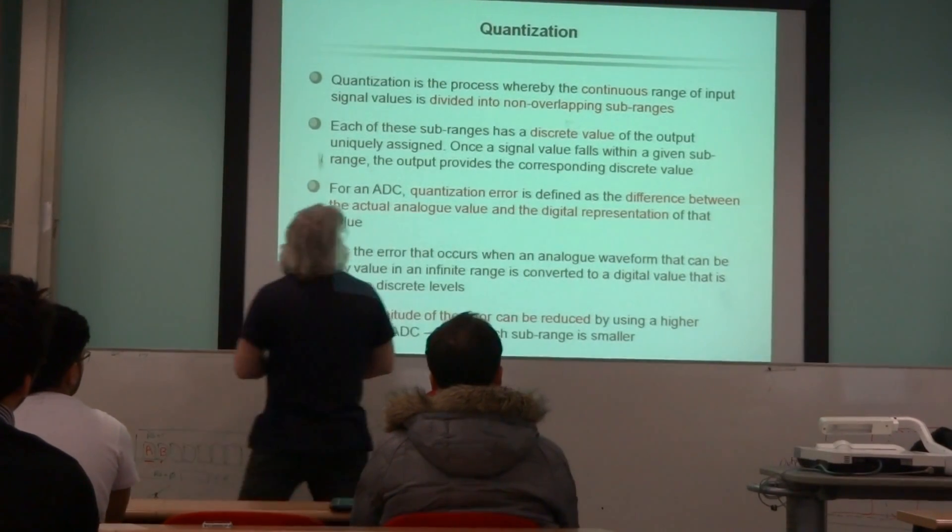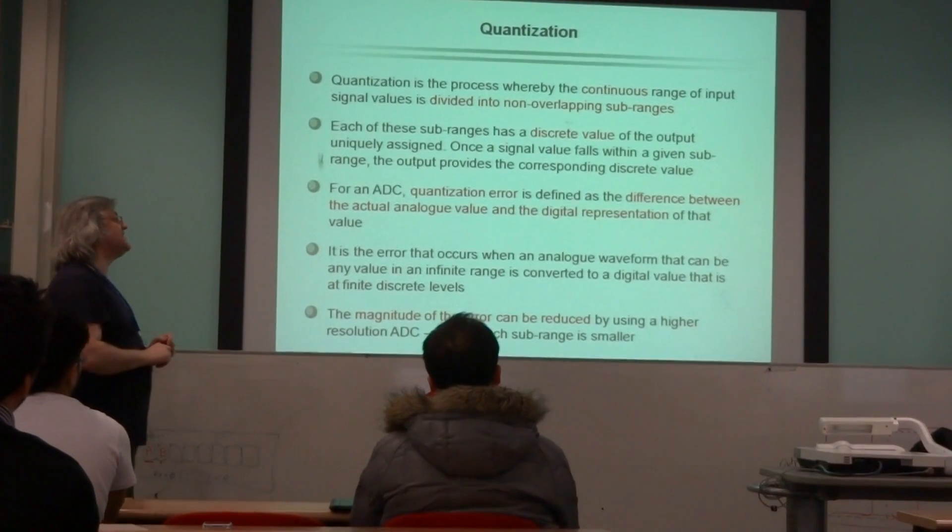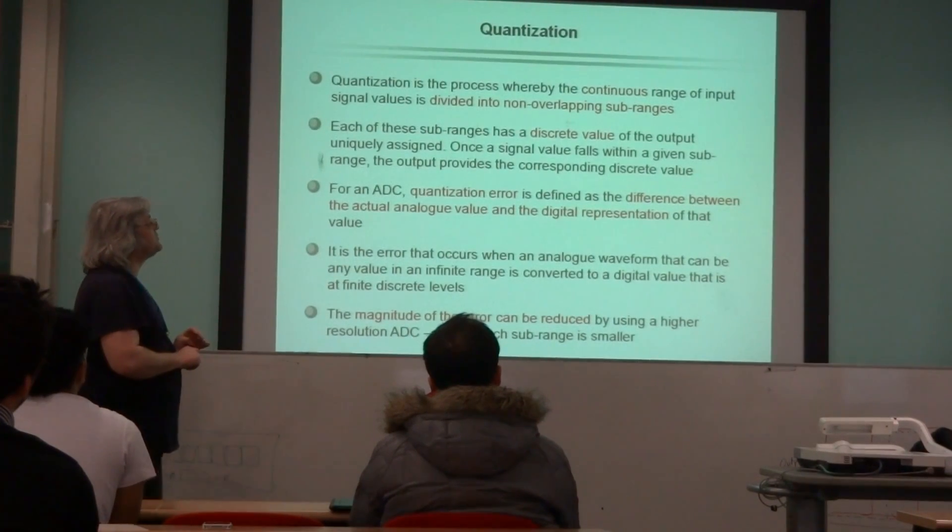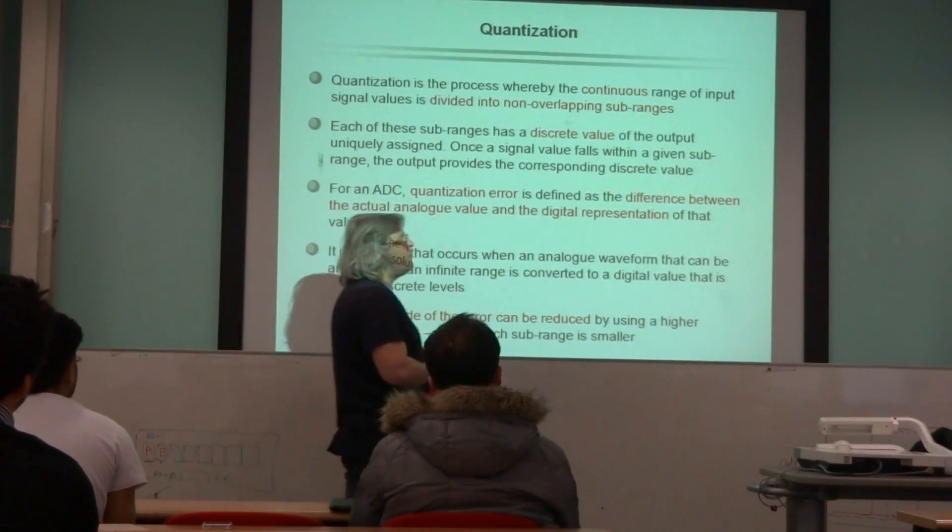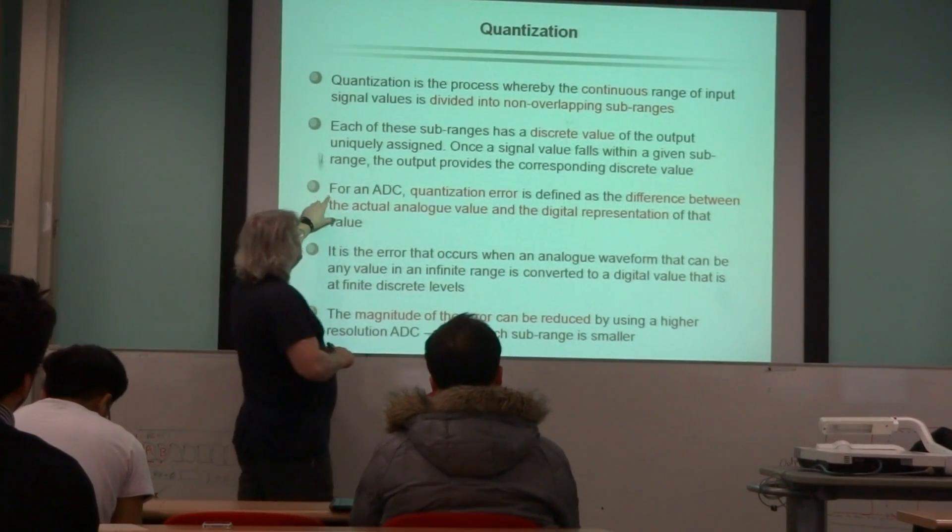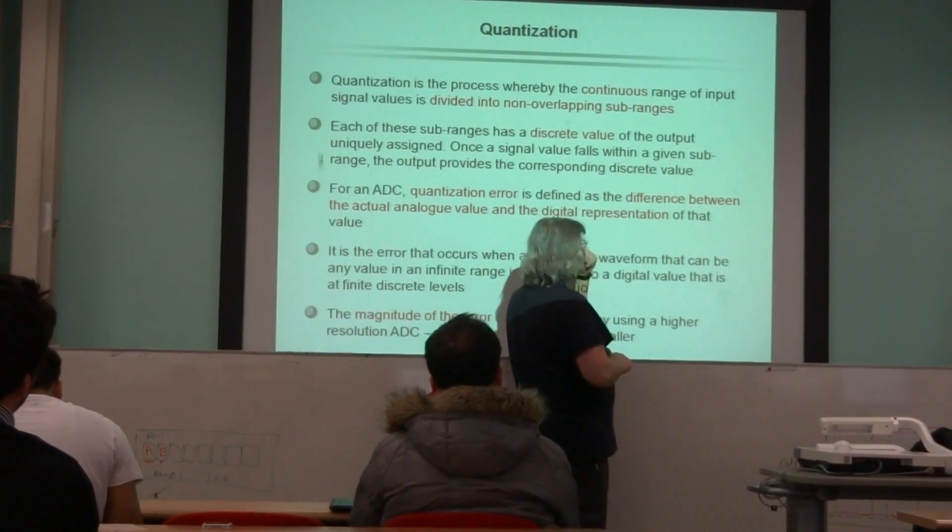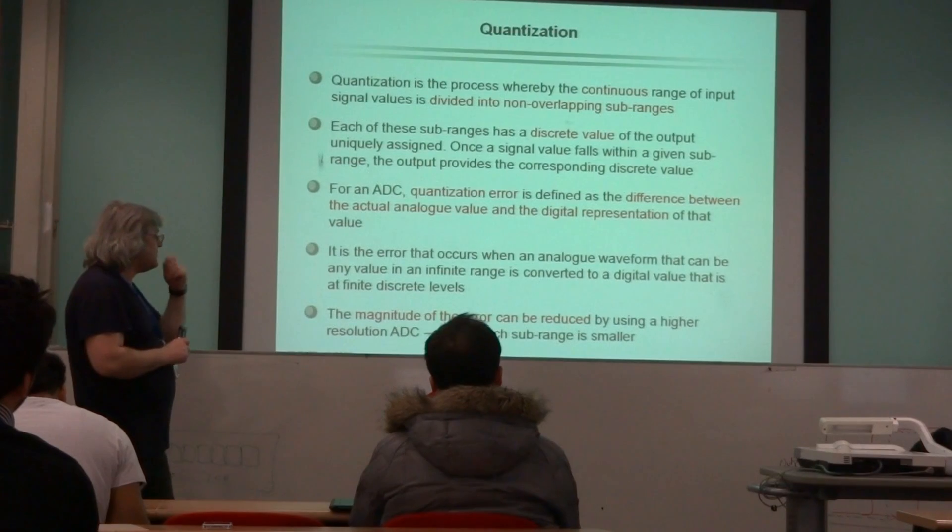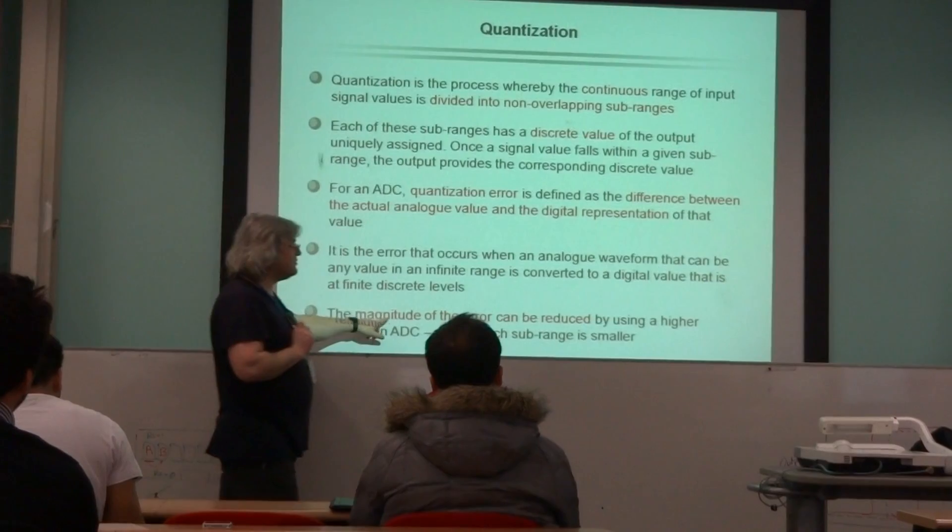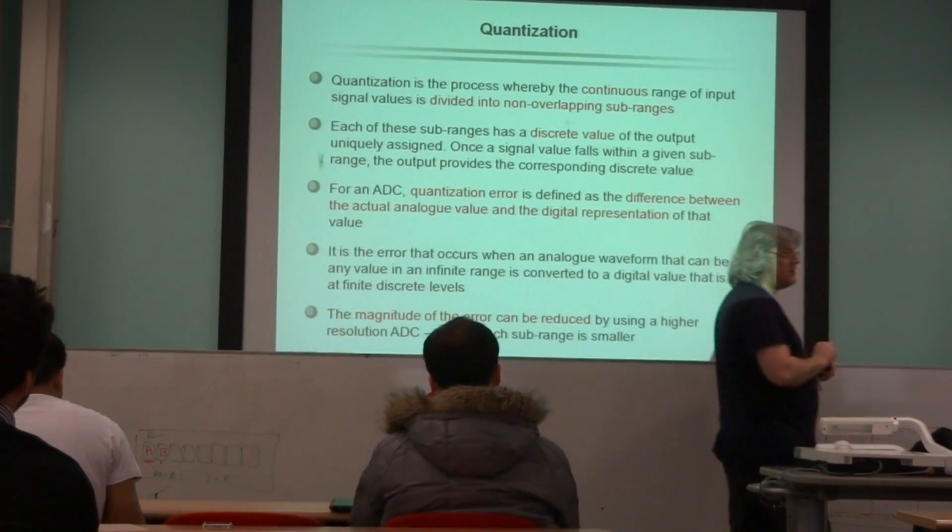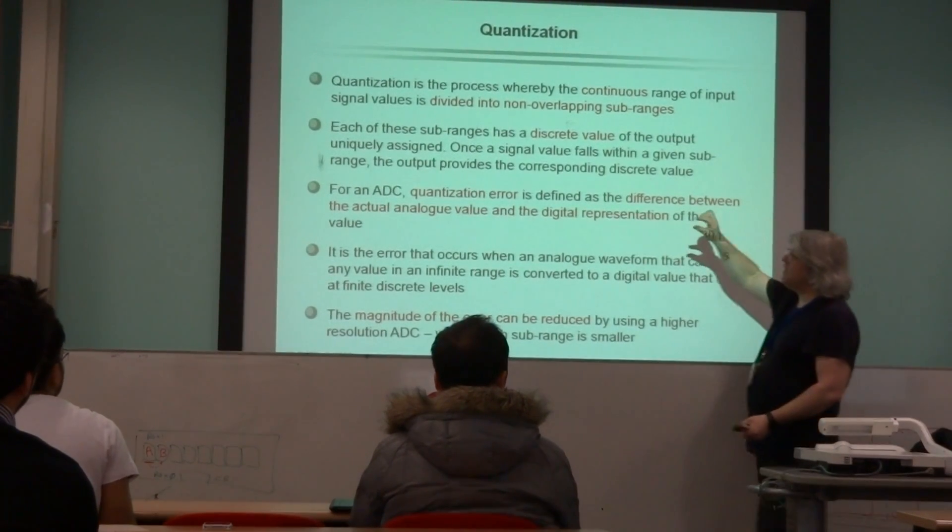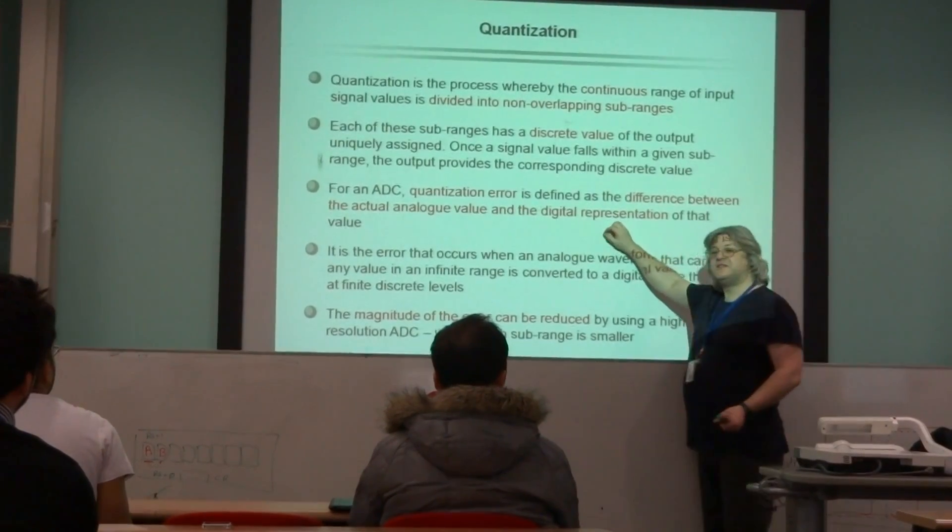You would be expected to know, you have to provide a definition of quantization. So quantization is this process where, I'll read it out, the continuous range of input signal values is divided into non-overlapping sub-ranges. Quantization error defines the difference between the actual analog value and its digital representation. So the only way to reduce the magnitude of the quantization error is to increase the resolution of your analog to digital conversion system. Have more steps where the size of the sub-range is decreasing.